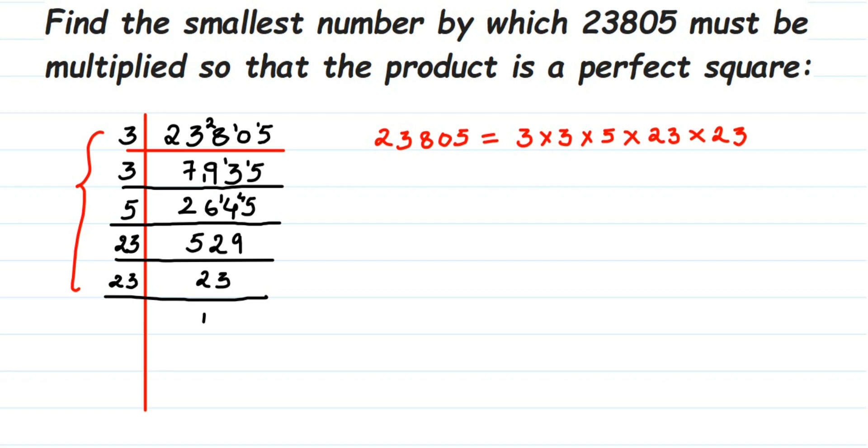Now, if this number is a perfect square, the prime factors we got will always be in pairs. You can see that 3 is in a pair and 23 is also in a pair, but there's this 5 which is single. It's not paired up.